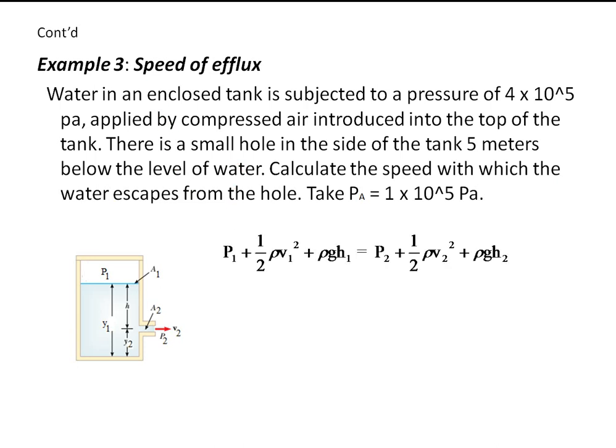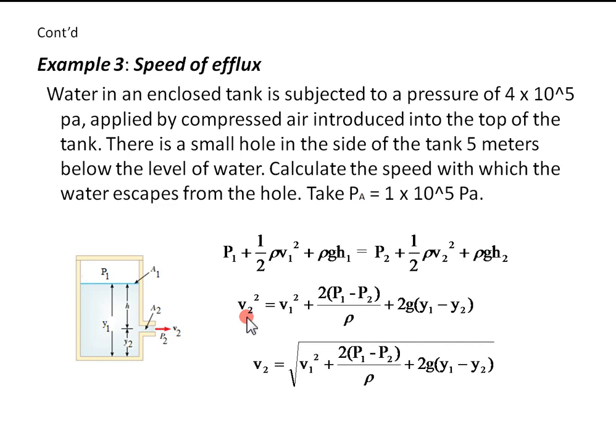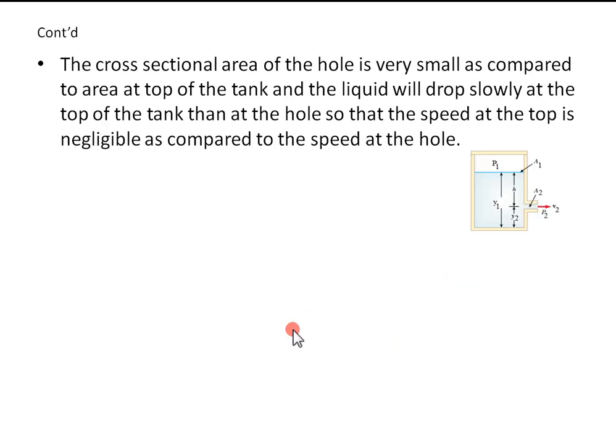The speed with which the water escapes is known as the speed of efflux. Writing Bernoulli's equation and rearranging for V2 and taking the square root of both sides, we get V2 equals this expression: V1 squared plus 2 times P1 minus P2 over rho plus 2G Y1 minus Y2. The very important assumptions here: the cross-sectional area of the hole is very small as compared to the area at the top of the tank.